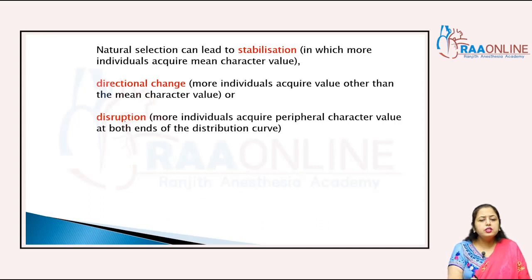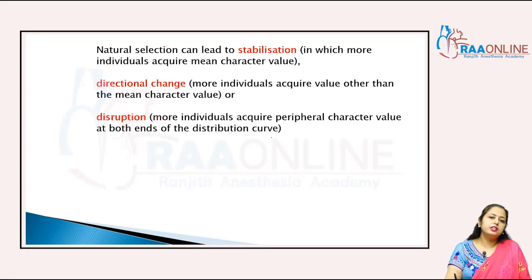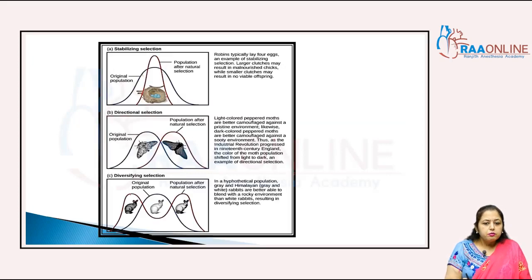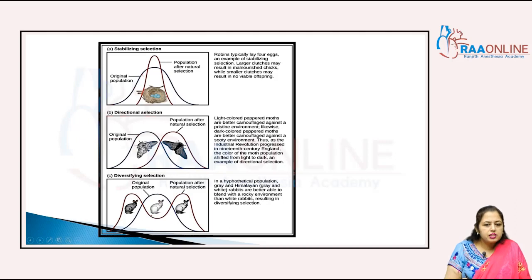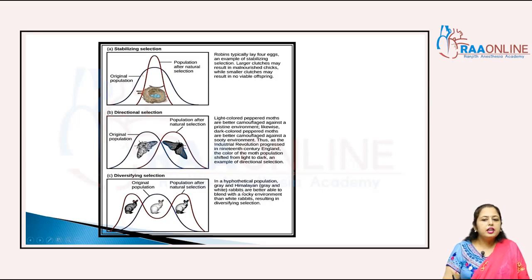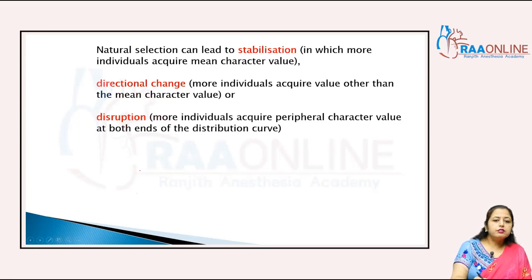Third is disruption — more individuals acquire the peripheral character value at both ends of the disruptive curve. You can see the population after natural selection versus the original value. In a hypothetical population, they are better able to blend, resulting in diversifying selection.